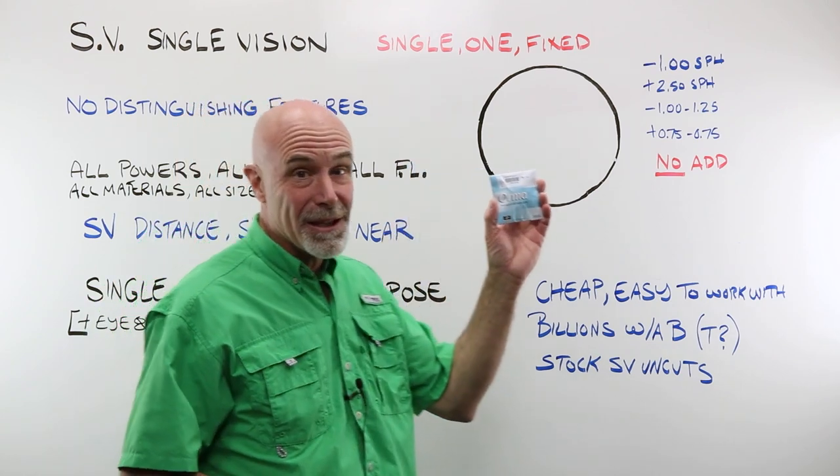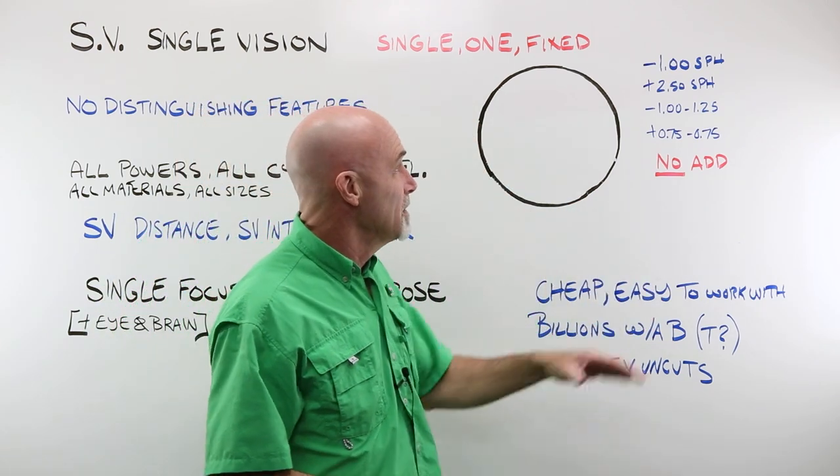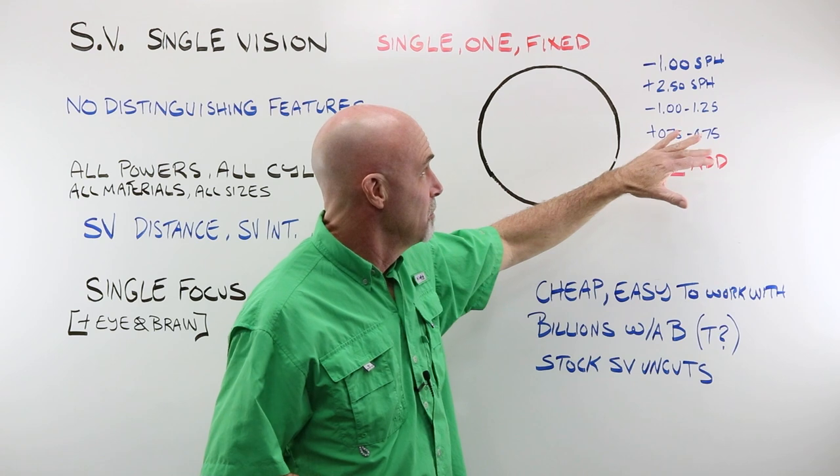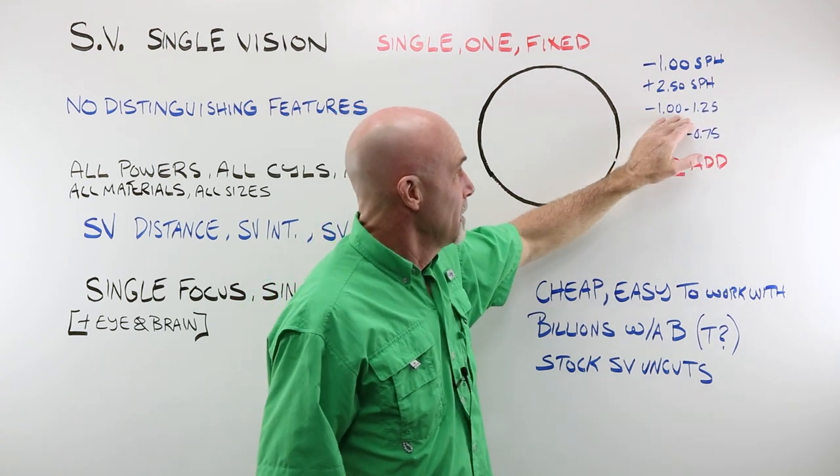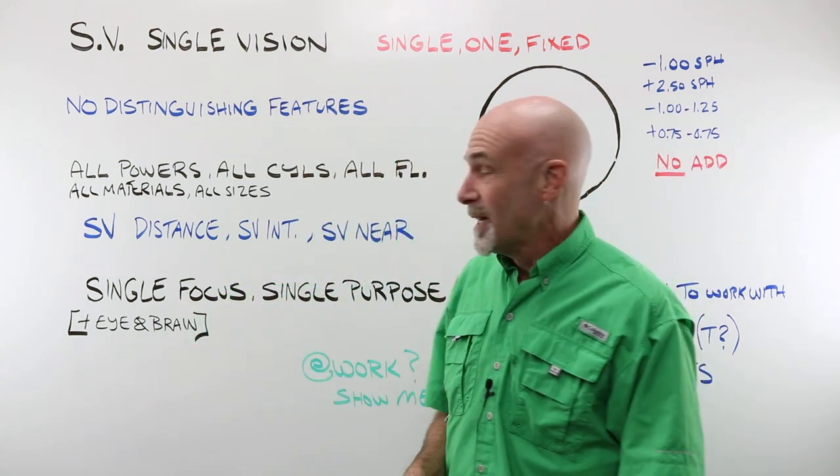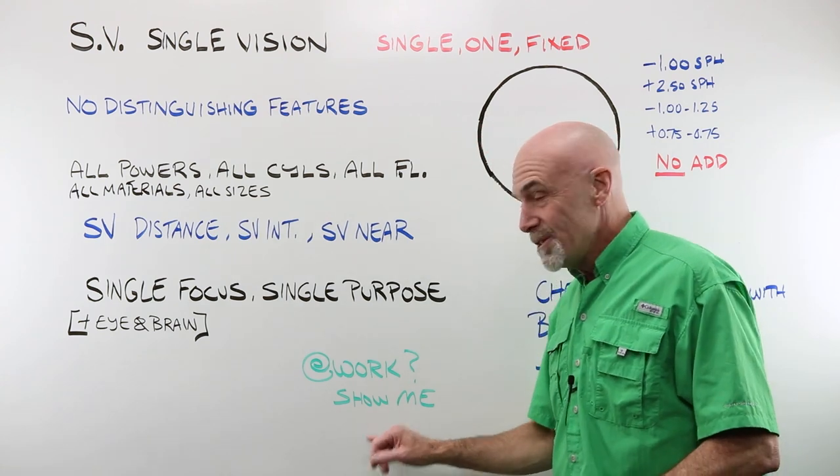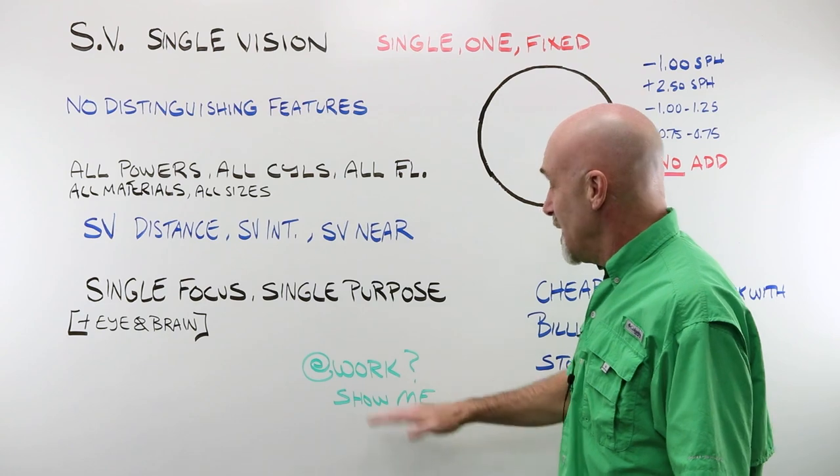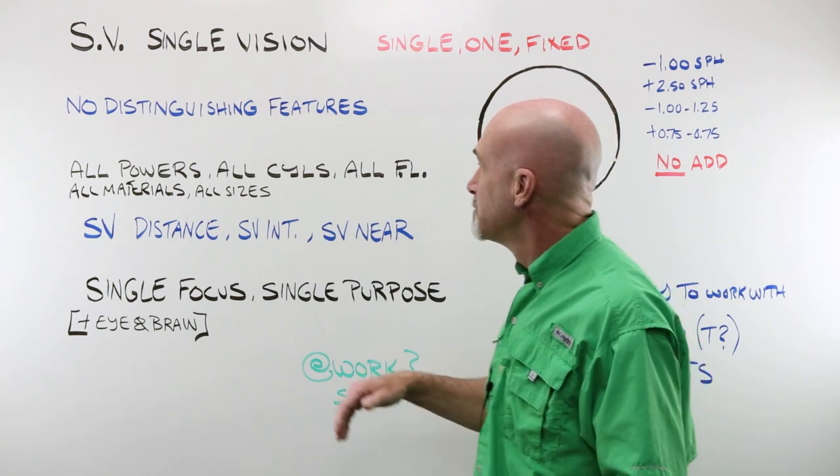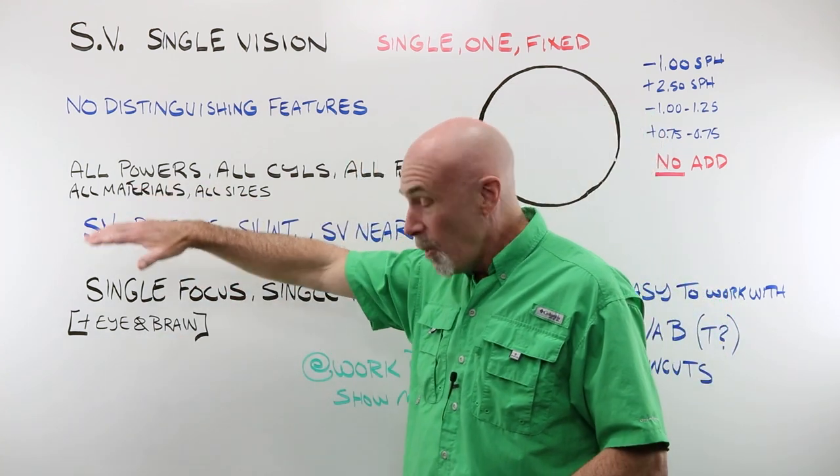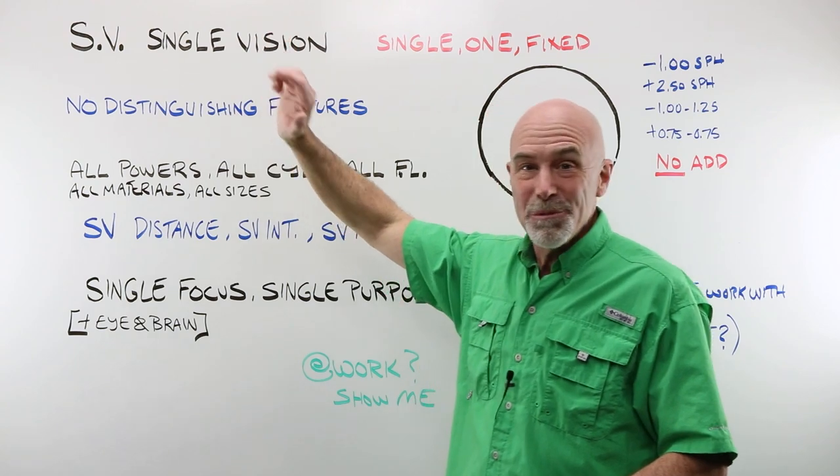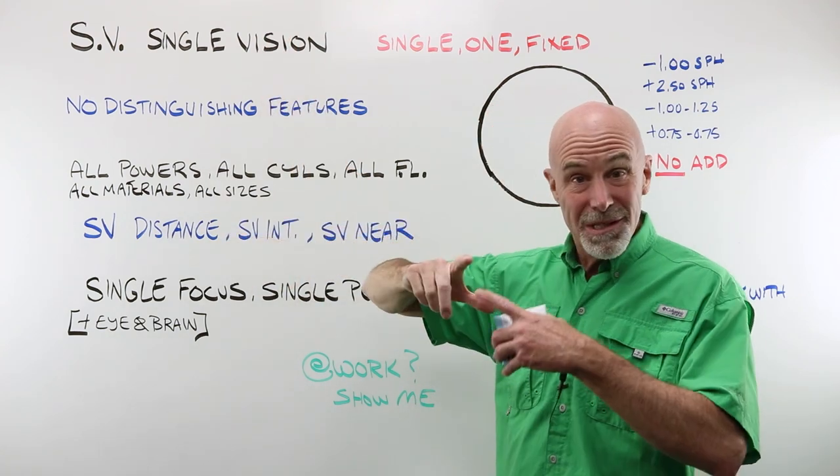If I have a packet like this or I'm filling in an order for a lens, it can be very simple numbers: spheres, plus one, minus one, plus 250, spherical, or sphero cylinder, minus one, minus 125, plus 75, minus 75, that kind of stuff. By all means, if you are completely and totally brand new to this, you're at work, ask somebody to show you a single vision lens. Single vision lenses are available in all possible powers, all possible cylinders, all possible focal lengths, all possible materials, and all different sizes.